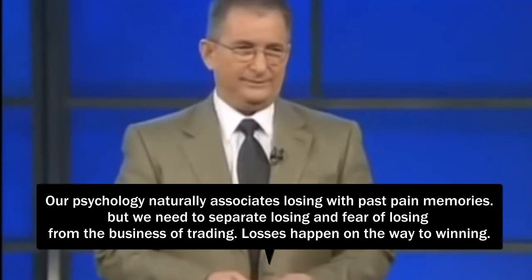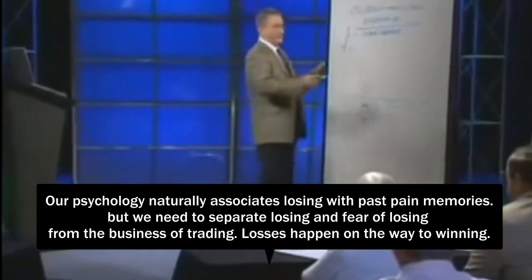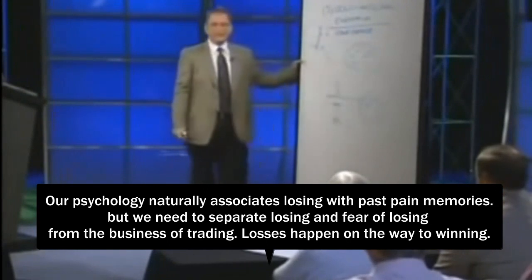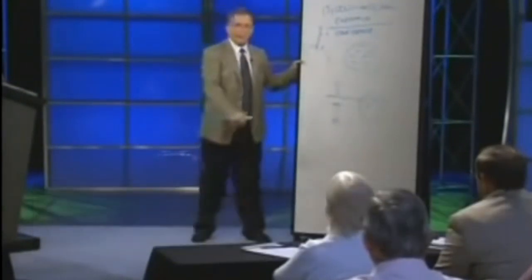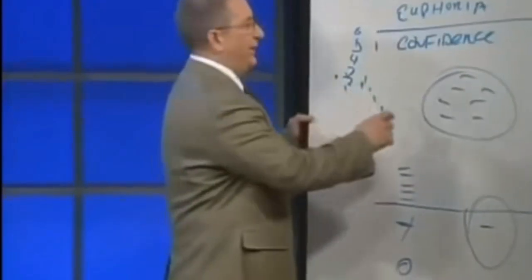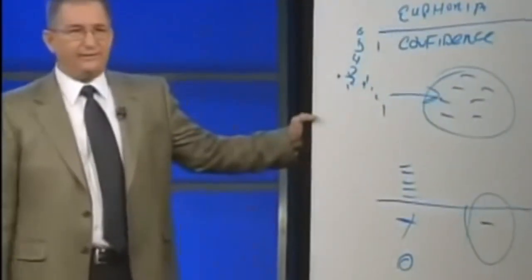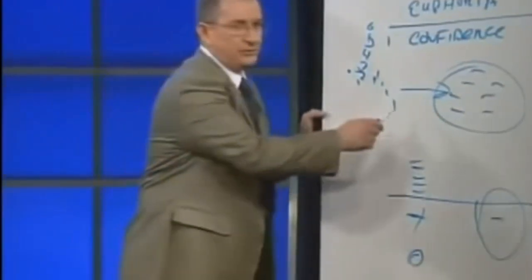It isn't just admitting that I'm wrong on this one trade. Our mind, because of the way our minds are wired, has the potential to tap us into the accumulated negative energy of every time I've been wrong in my life. So if this circle represents a huge ball of negative energy inside of our mental environment about what it means to be wrong, being wrong on just one trade could tap us into that pain.